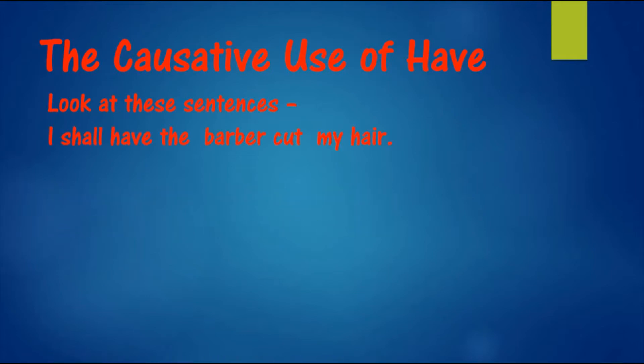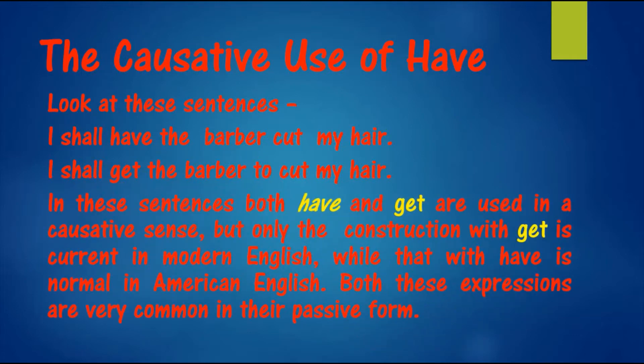Look at these sentences. I shall have the barber cut my hair. I shall get the barber to cut my hair. Both 'have' and 'get' are used in a causative sense. Only the construction with 'get' is current in Modern English, while that with 'have' is normal in American English. Both these expressions are very common in their passive form.